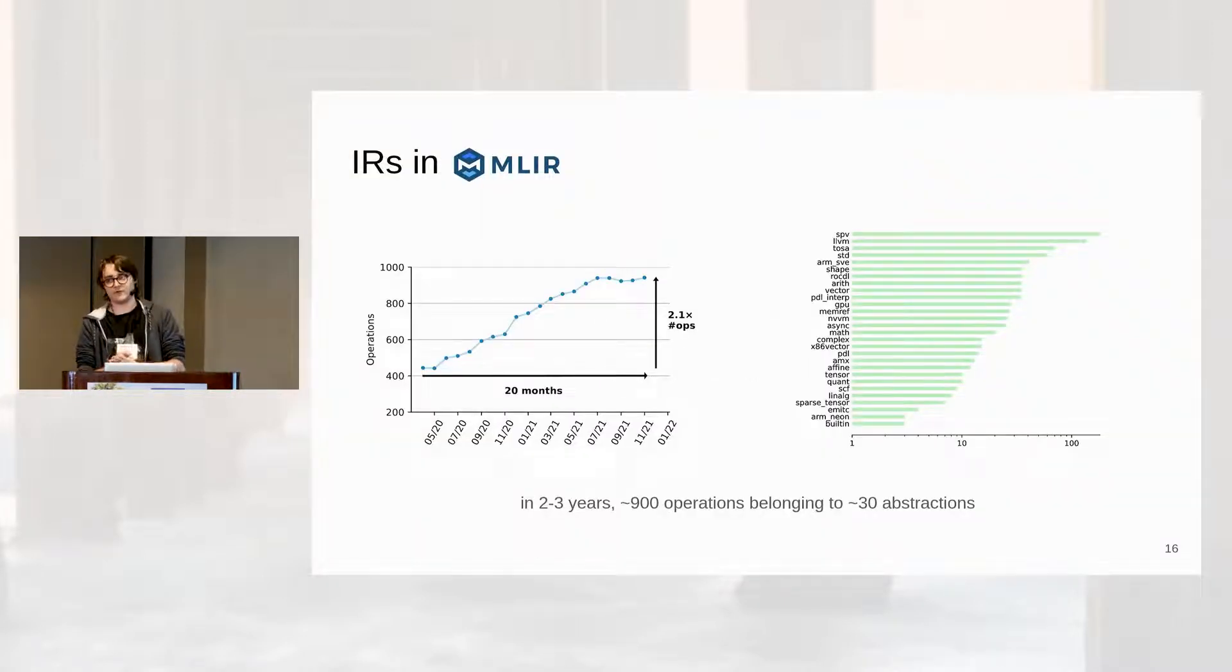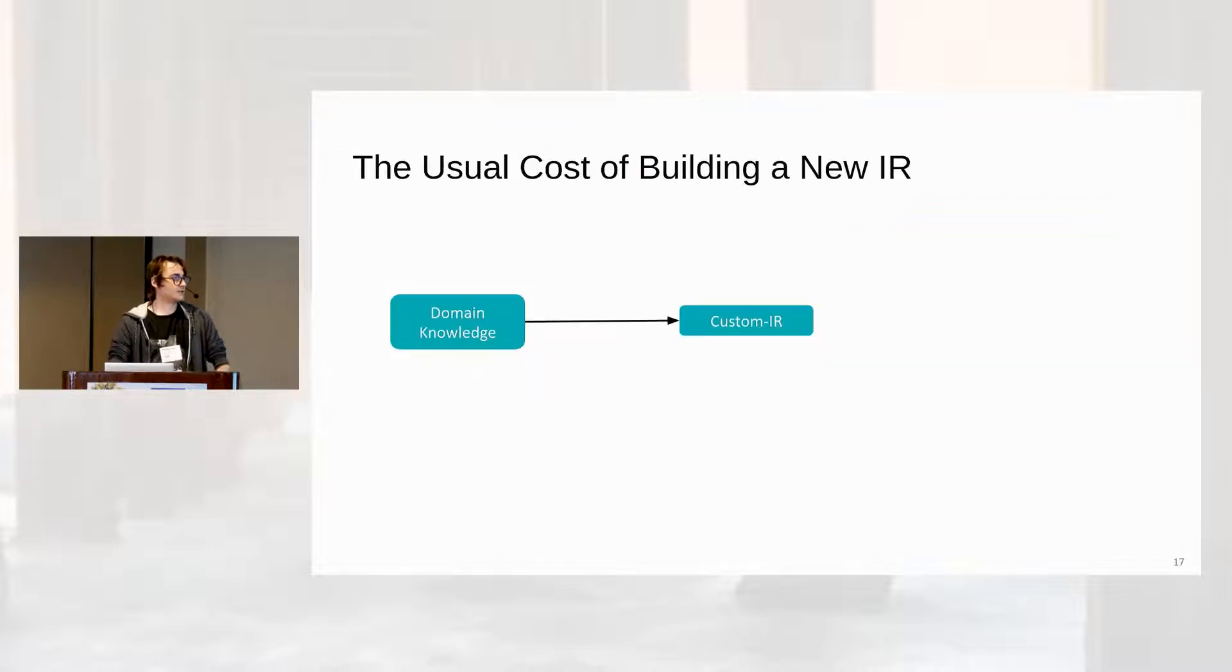And if we look again in this MLIR compiler framework, we have around 30 different levels of abstraction, or what's called dialects, which is an intermediate representation. And these intermediate representations have around 1,000 operations in total, which are instructions in what you would have in traditional compilers.